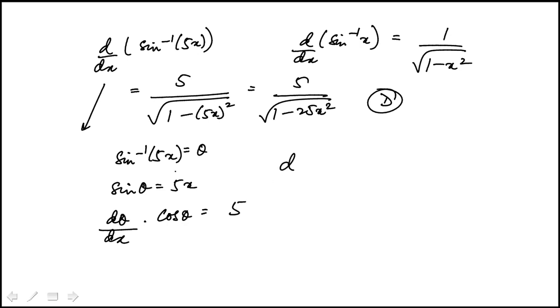So θ here is really sin inverse 5x. Therefore, d/dx of sin inverse 5x equals dθ/dx, which equals 5 over cosine θ.